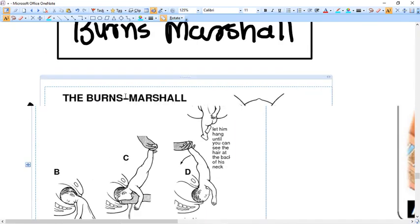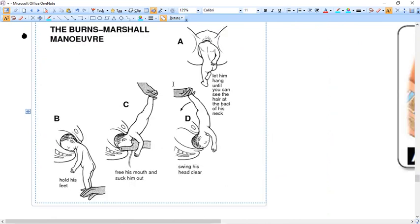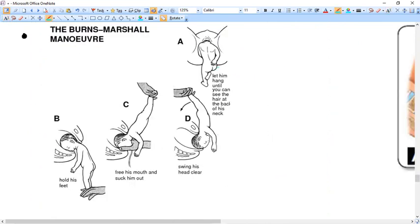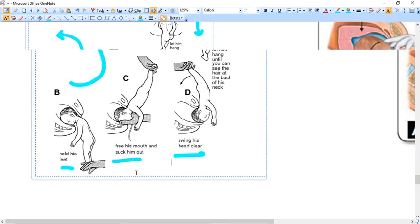In Burns Marshall method what you do is this. First of all you have extracted all four limbs, abdomen, buttocks, everything. Now only head is inside. Then you allow and let him hang until you can see the hair at the back of his neck. Okay, so this will give the traction to the head by itself only. Then you hold the feet and then you rotate 180 degree giving support to his mouth. So this is how the head of the baby comes out. Okay, so this was Burns Marshall method.